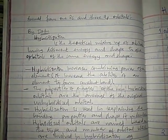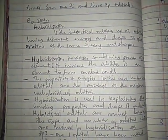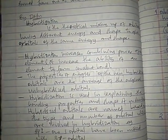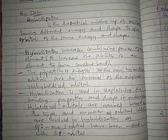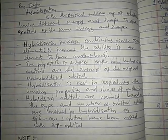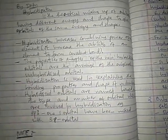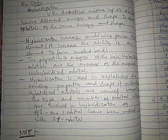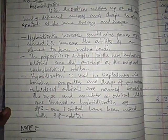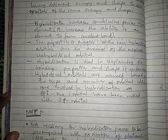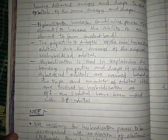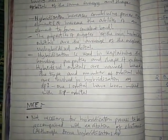As the term suggests, hybrid means it occurs from mixing. Hybridization increases the combining power of an element, or it increases the ability of an element to form covalent bonds. The properties and energy of the new hybridized orbital are the average of the original orbitals. For example, an sp hybridized orbital will have properties in between s and p orbitals. Hybridized orbitals are named based on the type and number of orbitals involved. sp3 means one s orbital mixed with three p orbitals; sp2 means one s orbital mixed with two p orbitals.